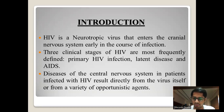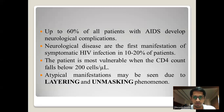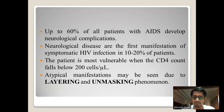The first stage is primary HIV infection, second is latent disease, and third is AIDS. Diseases of the central nervous system in patients infected with HIV result directly from the virus itself or from a variety of opportunistic agents. Up to 60% of all patients with AIDS develop neurological complications, with first manifestation of symptomatic HIV infection occurring in 10 to 20% of patients when the CD4 count falls below 200 cells.